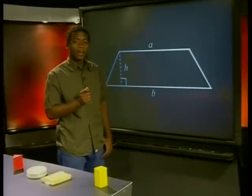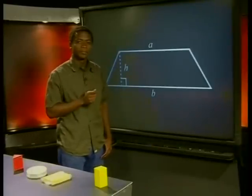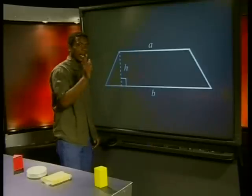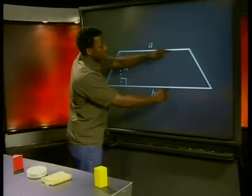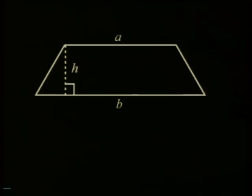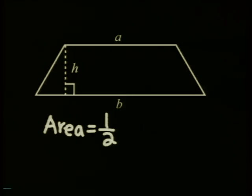Do you remember the formula for area of a trapezium? It's half the perpendicular height times the sum of the two parallel sides. This is written in short as area of a trapezium equals half the perpendicular height H multiplied by the sum of the parallel sides A and B.